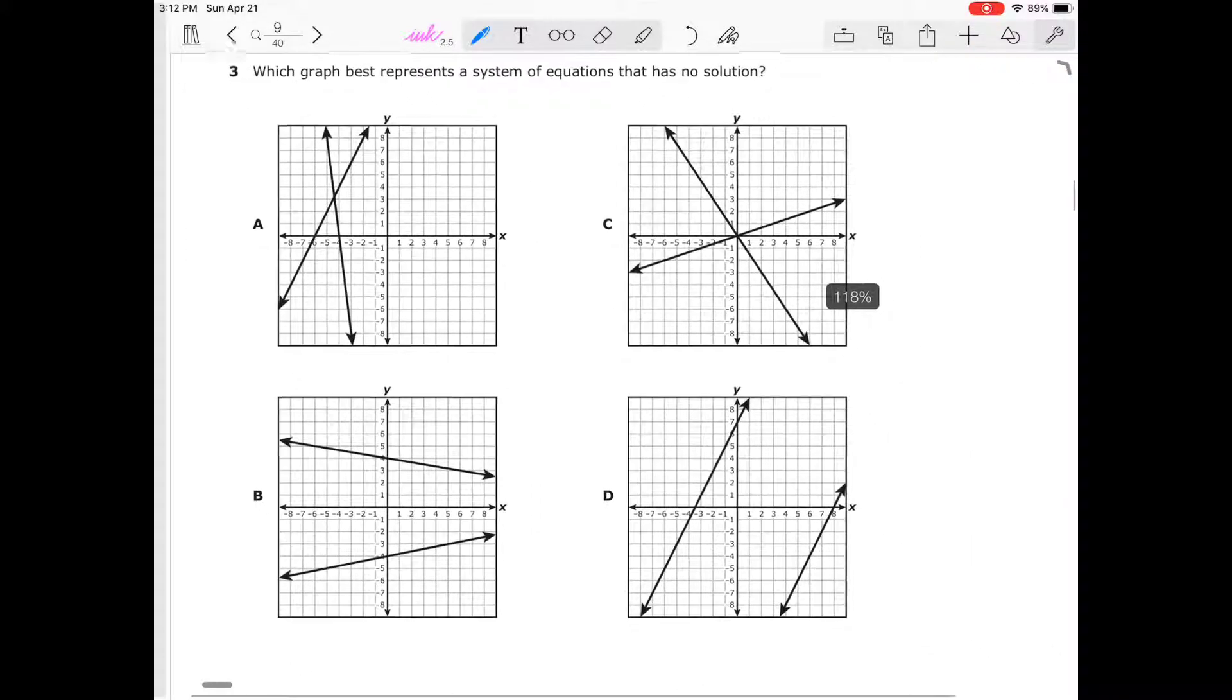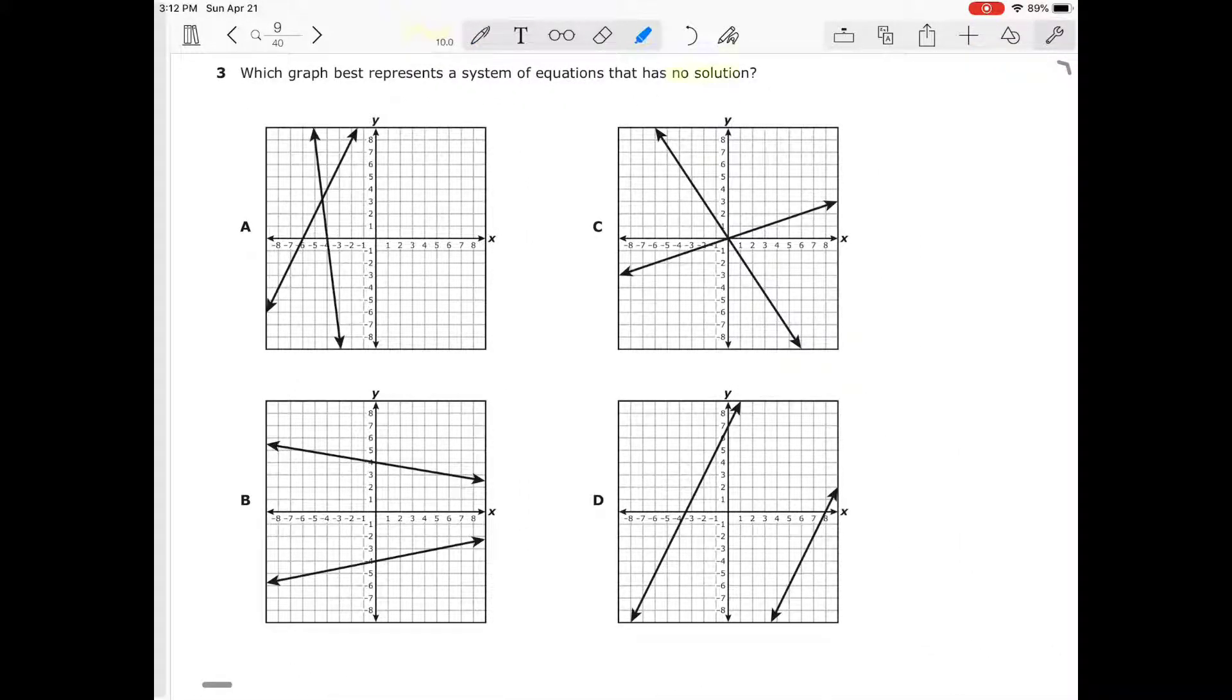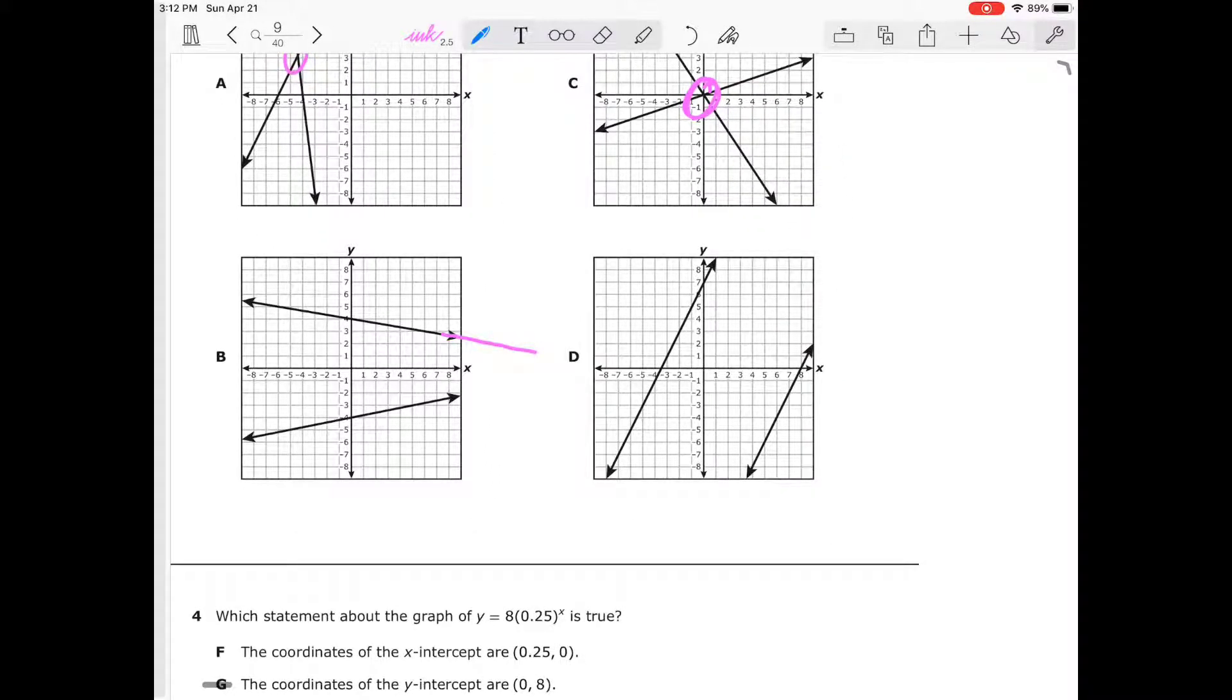Which of the graph best represents no solution? No solution means no intersection. I have an intersection there, one solution there, one solution there. These would eventually have a solution somewhere out there. So my only obvious choice is going to be D.